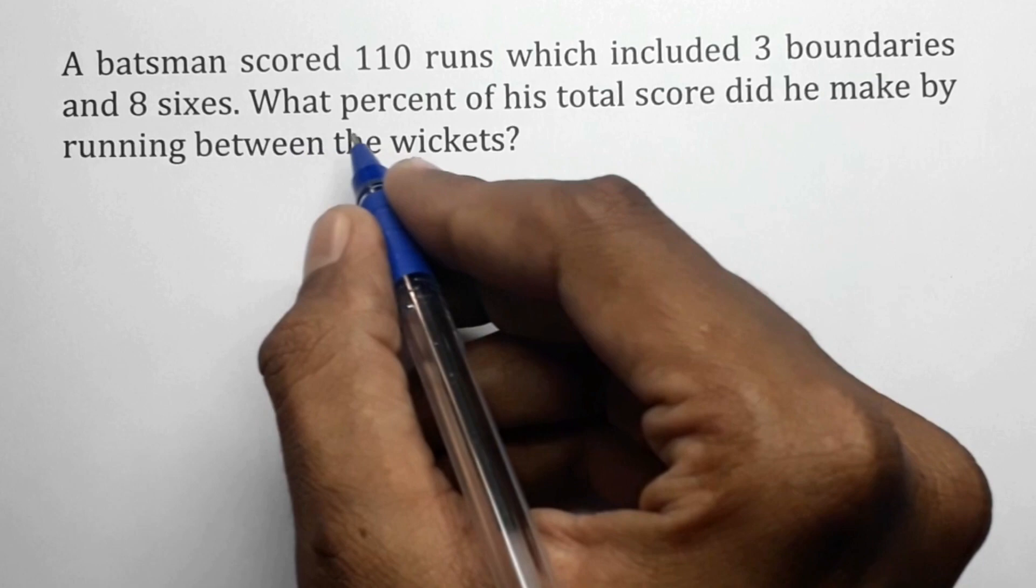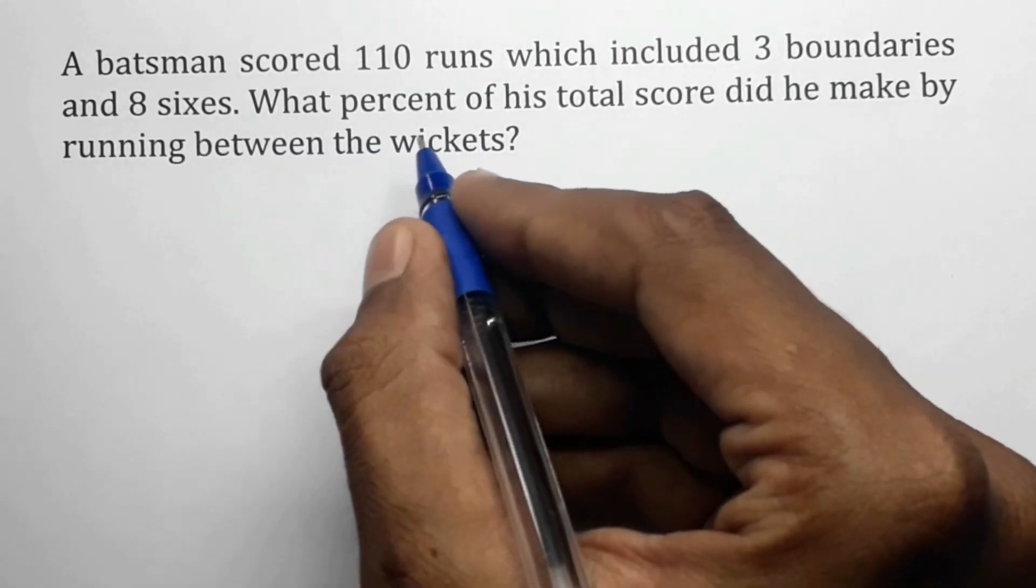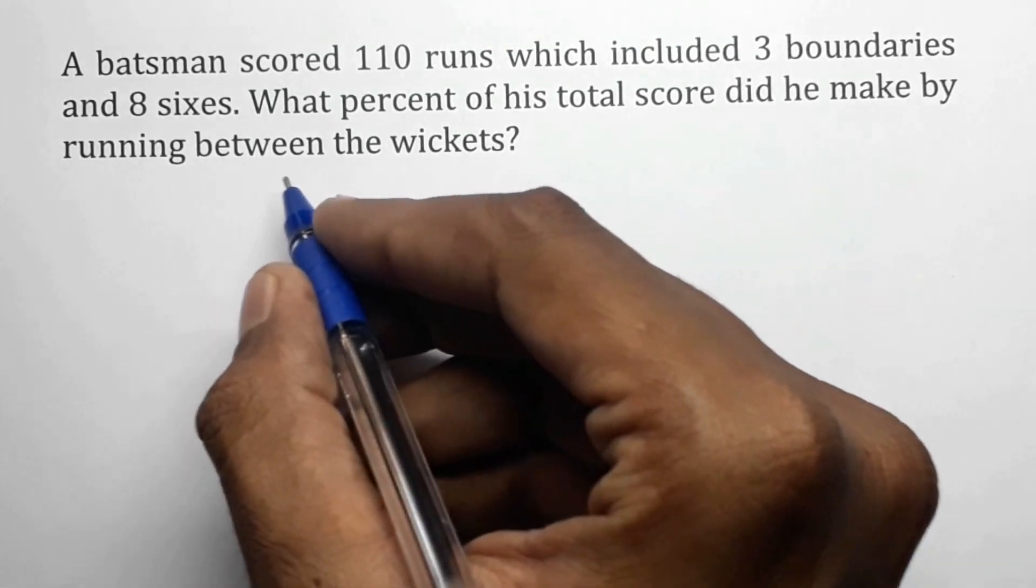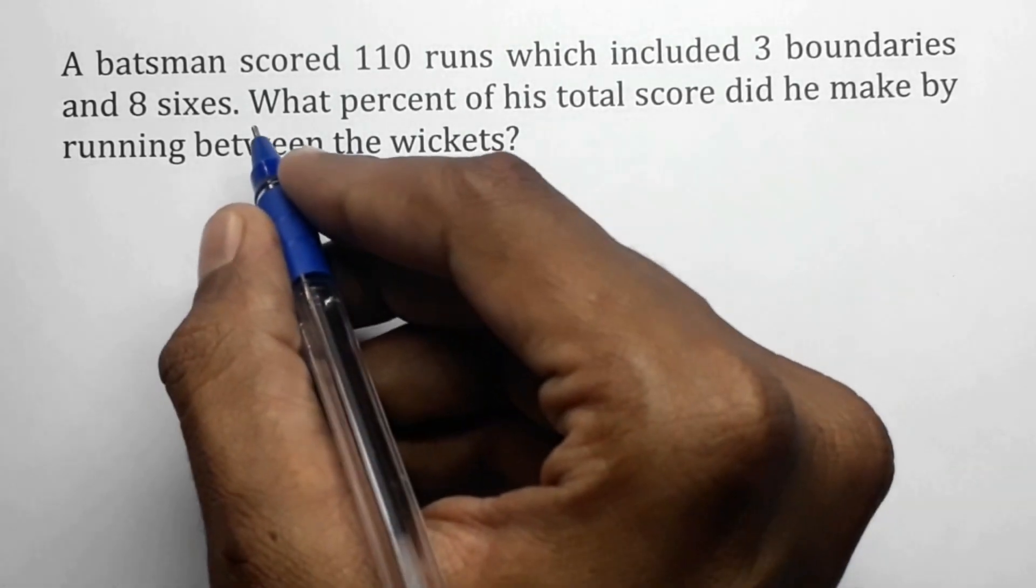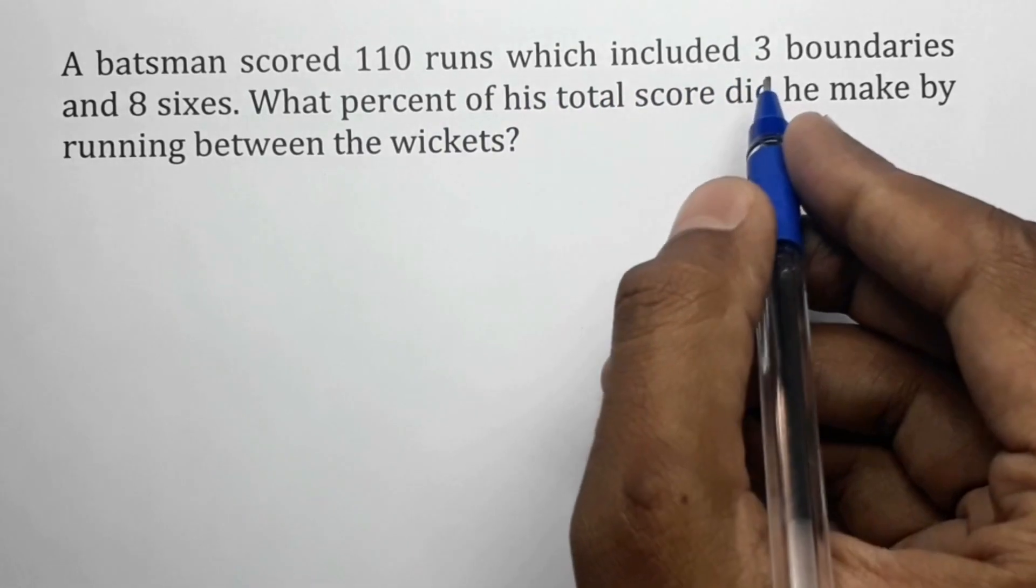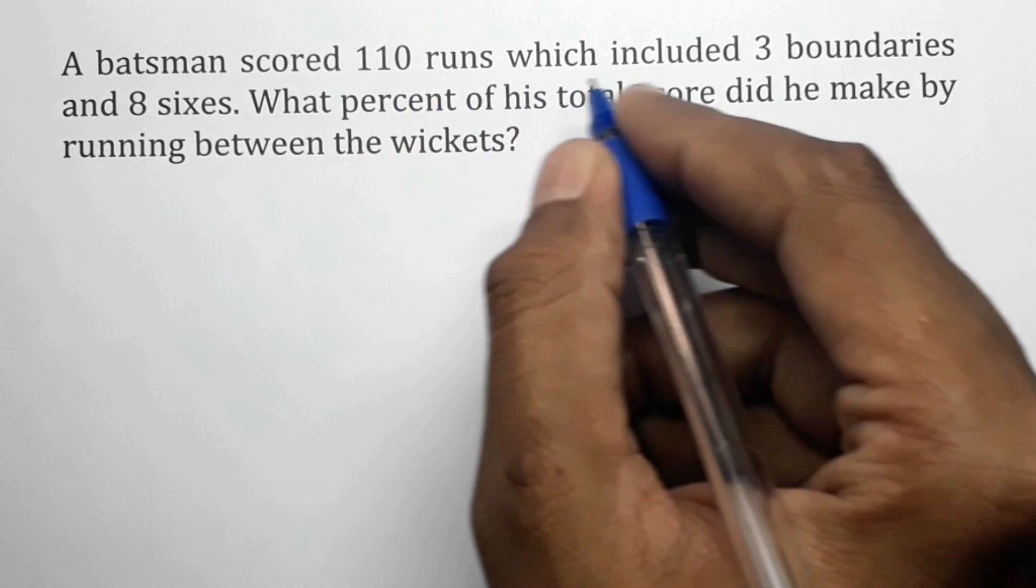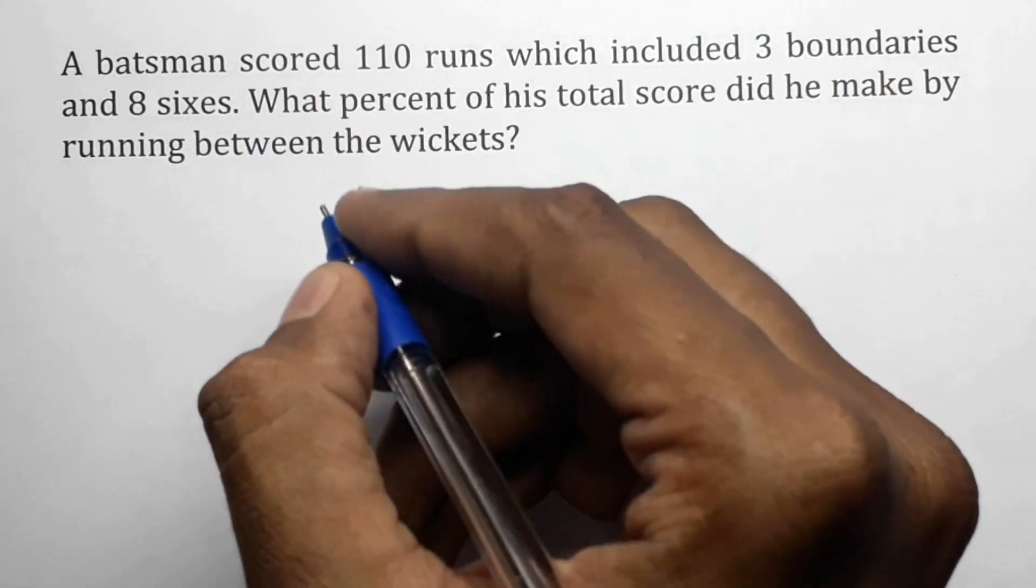In this problem we have to calculate the percentage of runs the batsman scored by running between the wickets. For that, we have to calculate the runs scored by boundaries and sixes. The batsman scored 3 boundaries and 8 sixes.